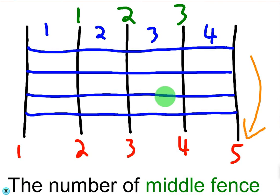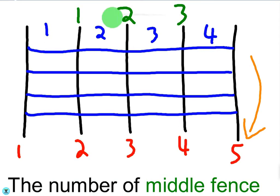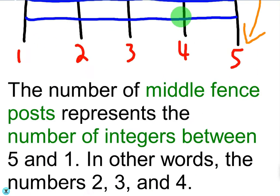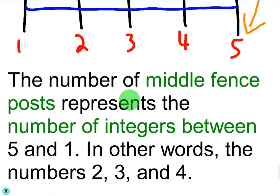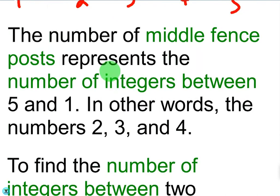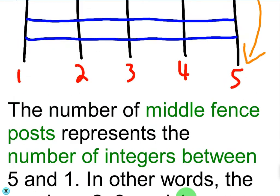So the question is, if we're given any two integers, how do we figure out how many integers are between those two integers? Well, notice that if we figure out the number of fence sections, all we have to do is subtract one from that to figure out how many middle fence posts there are. So there are four total sections — subtracting one from that gives us how many fence posts are between. The number of middle fence posts represents the number of integers between five and one — in other words, the numbers two, three, and four.